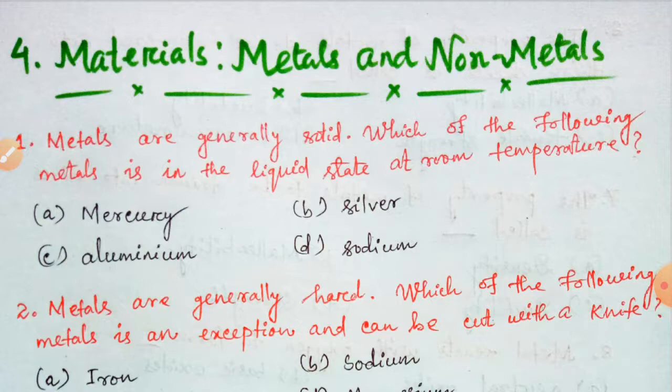Your first question is: Metals are generally solid. Which of the following metals is in the liquid state at room temperature? Mercury, Silver, Aluminium, Sodium. Generally metals are solid, but which metal is in liquid state at room temperature? Your correct answer is Option A, that is Mercury.